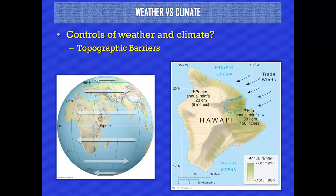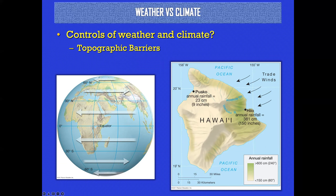Topographic barriers are another control of climate. Depending on wind direction, some places can be very wet or very dry. For example, the trade winds hit the northeastern side of the Big Island and Hilo gets about 150 inches of rain a year, but on the other side, the town of Puako gets about nine inches of rain a year — same island. That's a function of topography.